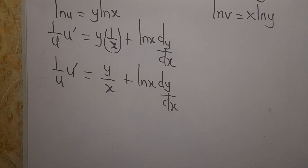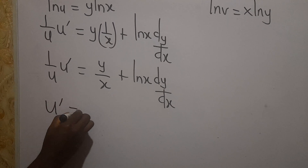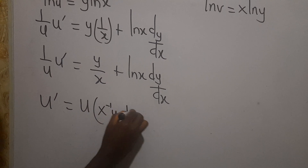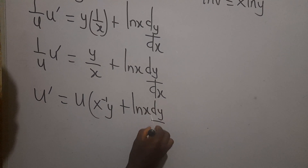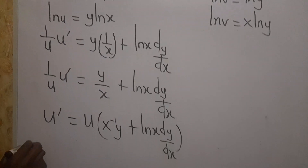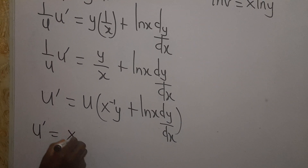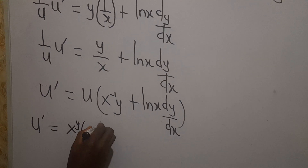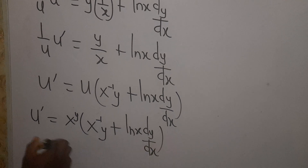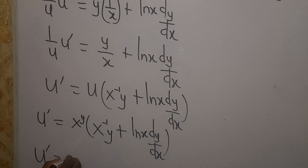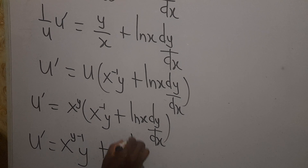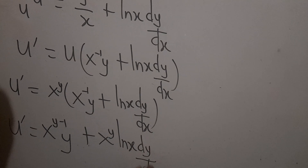I'll multiply through by u to make u prime the subject. So u prime equals u times the bracket x exponent negative 1 times y plus ln x times dy/dx. Remembering that u equals x exponent y, I substitute: u prime equals x exponent y times the bracket. Expanding, this gives x exponent (y minus 1) times y, plus x exponent y times ln x times dy/dx.